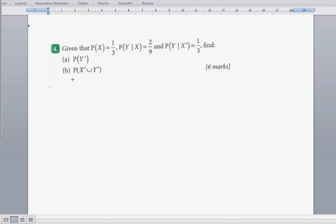All right, so we're given this probability question, and I know that the probability of X is one-third. I also know that the probability of not X is going to be two-thirds, and I also know about the probability of Y.